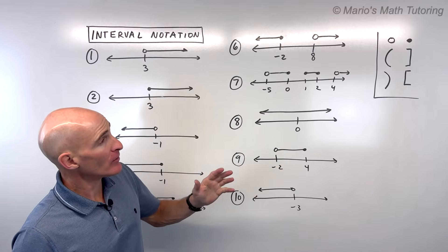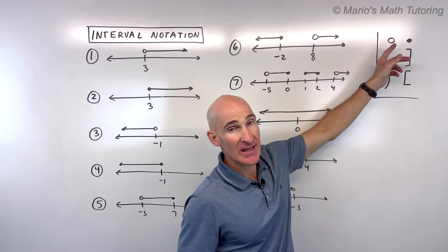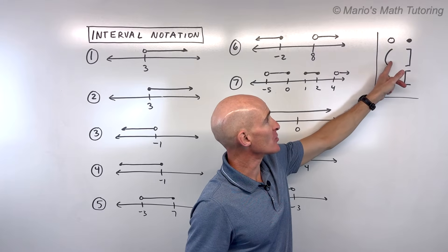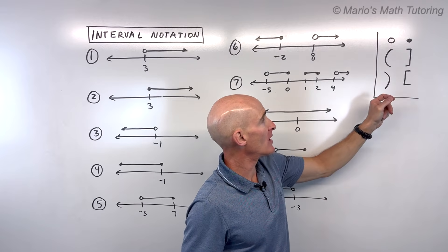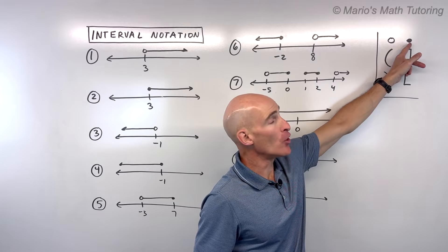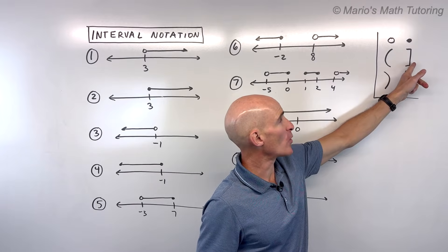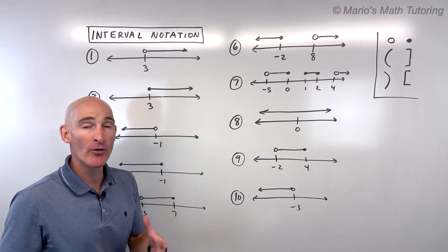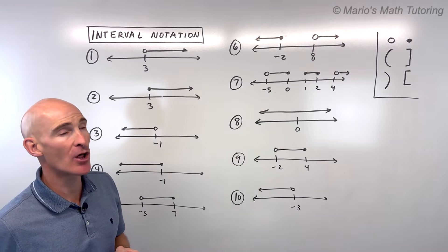A little primer here. If it is open, meaning it doesn't include that value, we're going to use a parenthesis, this curved item right here, either to this direction or this direction. If it's closed and it includes that point, we're going to use a square bracket, like this. You'll see in these 10 examples that we're going to do together how this works, and I'll give you some tips and techniques along the way.